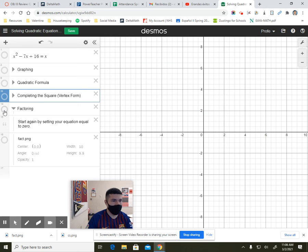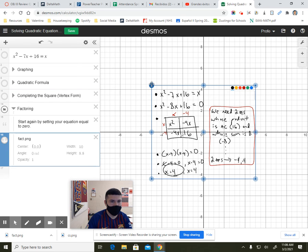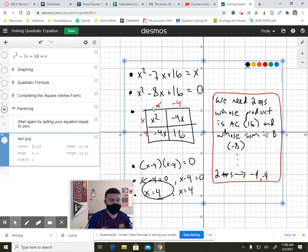One last method, factoring. Once again, I am going to start by setting it equal to zero. When I set it equal to zero, I have x squared minus 8x plus 16. I am going to think of how I factor this by putting an x squared and a 16 into my factoring box.